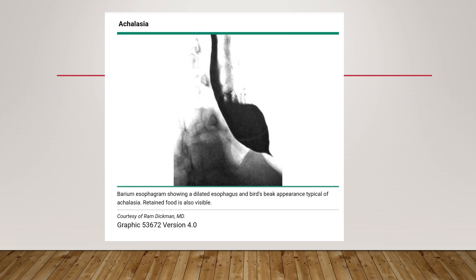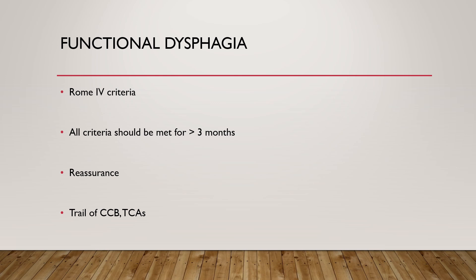This is the barium esophagogram showing a dilated esophagus with a bird-beak appearance, which is characteristic for achalasia. For functional dysphagia, we use the Rome IV criteria, which state: the patient has a sense of solid and liquid food lodging or passing abnormally through the esophagus; there is no evidence of esophageal mucosal or structural abnormalities; and there is no evidence of GERD or eosinophilic esophagitis on endoscopy.